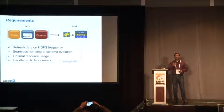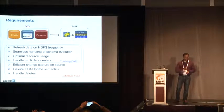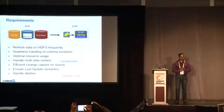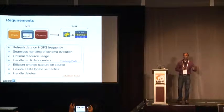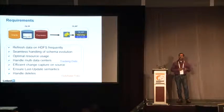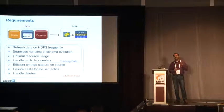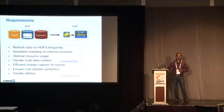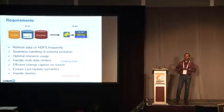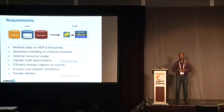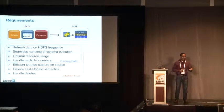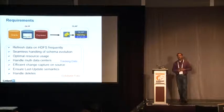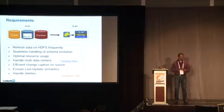The requirements at a high level: tracking data and database data have almost the same requirements, except database data has a few more. The important ones are: don't overload the source system when you try to take the data out, because the source systems are serving the site — if you overload them, it will cause latency and affect user experience. Last-update semantics: when a profile has changed 10 times, users on Hadoop want to see only the latest updated value. Deletes also need to be reflected on Hadoop seamlessly for compliance reasons.